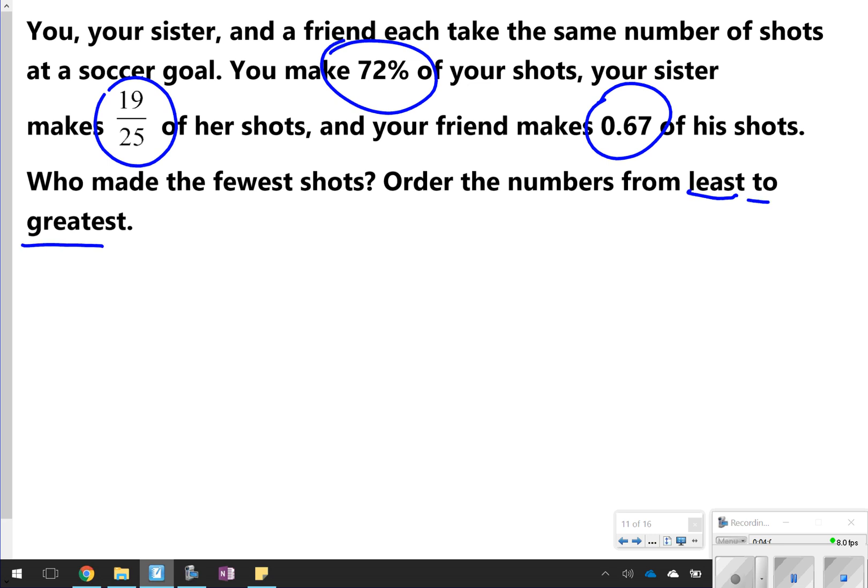So right off the bat, I know that I can easily compare these two numbers, the 72% and the 0.67, but what I really need to figure out is this 19/25. So I would just use my calculator and do 19 divided by 25. That's going to give me 76%, or 0.76. Now I can easily see the order.